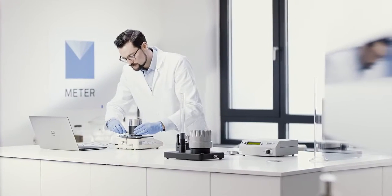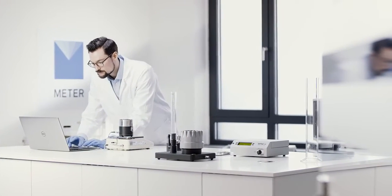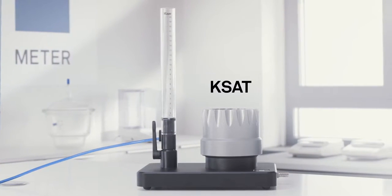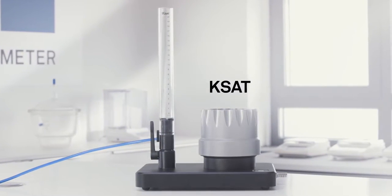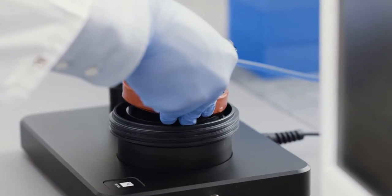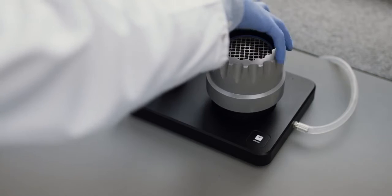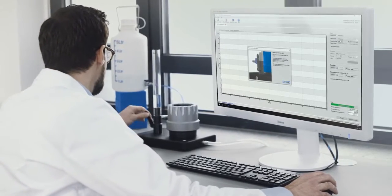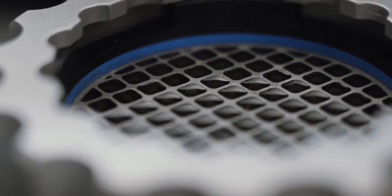This is how it works: prepare the sample, put it into the calibrated KSAT, and tighten the cap. Turn the valve, let the water run through the sample, and get the saturated hydraulic conductivity.